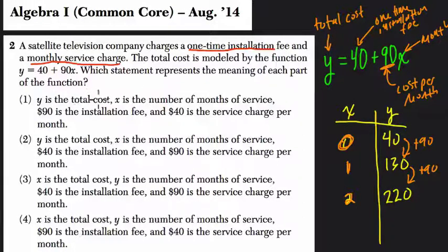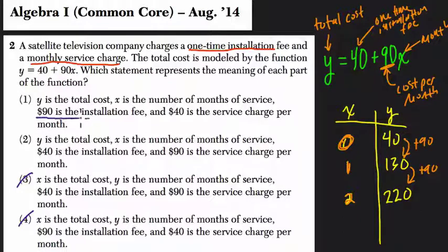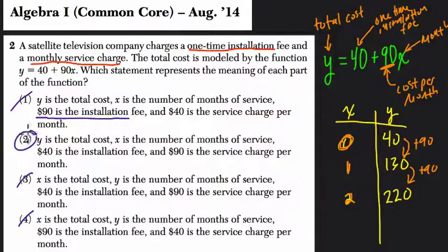Y is the total cost — that's true. I cross out choices 3 and 4 because they say x is the total cost. Choice 1 is incorrect because it says $90 is the installation fee, but we said $90 is the cost per month. So that choice is gone. Choice 2 is the only one that remains: $40 installation fee, $90 per month — we know this is correct.